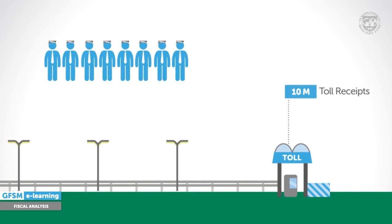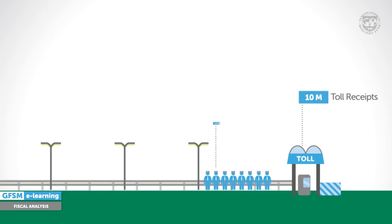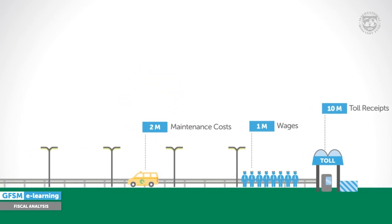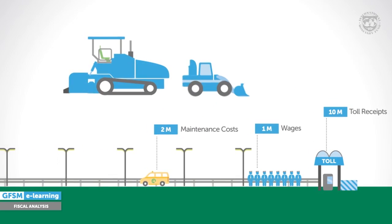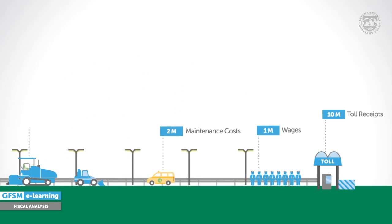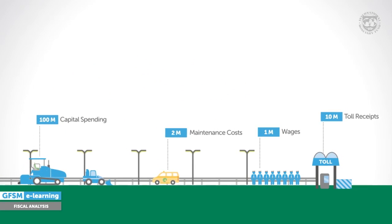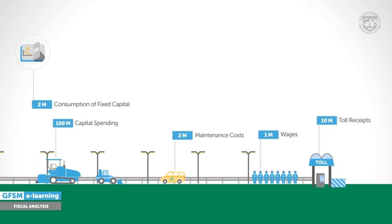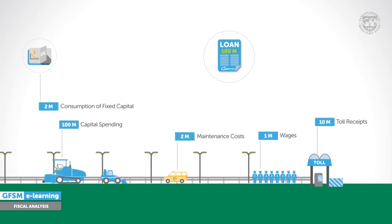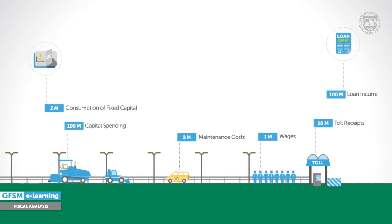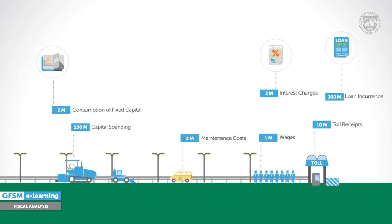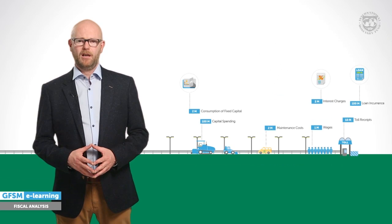First, there are wages to be paid for the toll collectors. Maintenance and other operational costs will also apply. Then, of course, there must have been capital spending for the road and supporting structures. Also, charges for the wear and tear of those assets. What about financing? The government probably has taken out a loan to pay for the road or issued bonds, and there will be interest payments and later on debt repayments. I hope the Finance Minister's staff recorded all these factors.